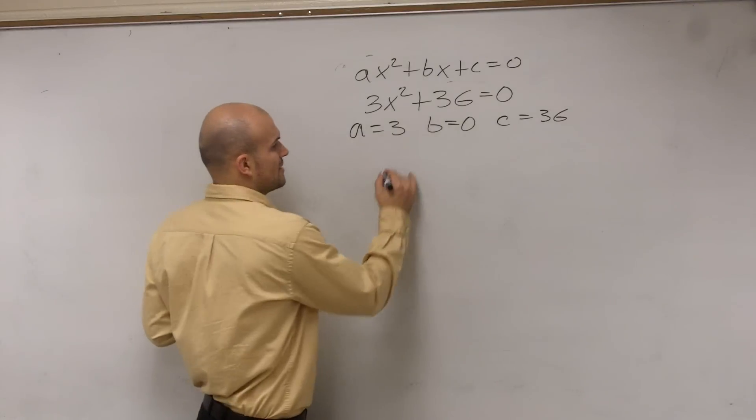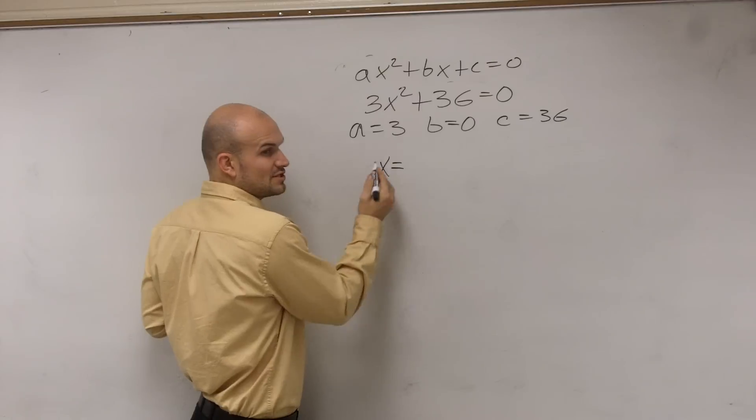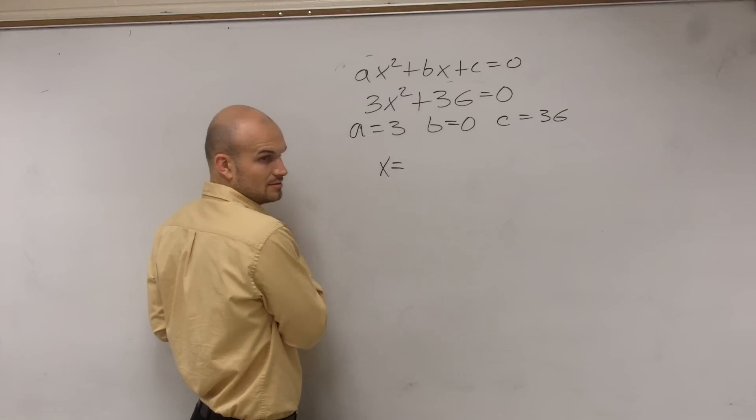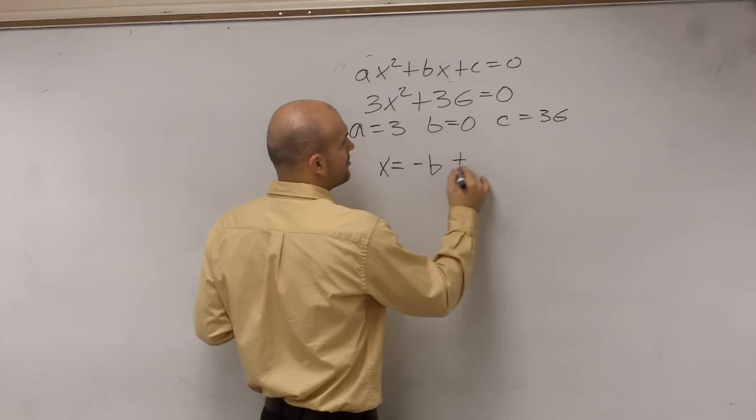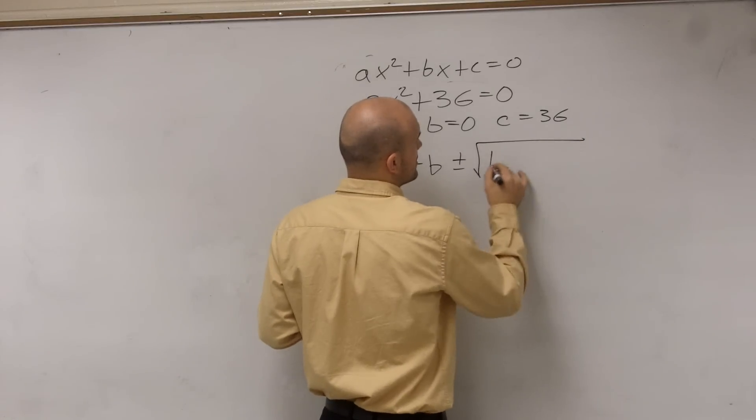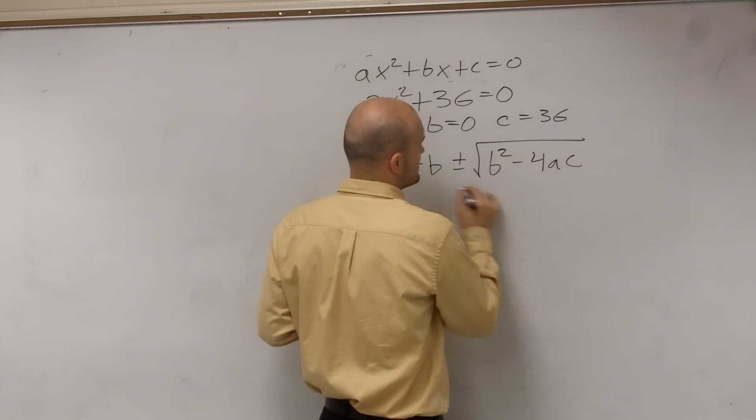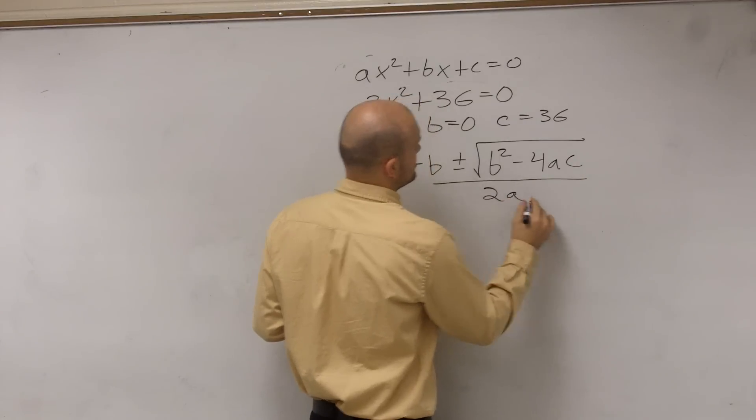Now, we need to understand what the quadratic formula says. Quadratic formula says your x is going to equal opposite of b plus or minus the square root of b squared minus 4 times a times c all over 2a.